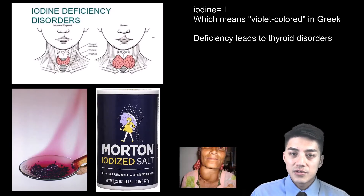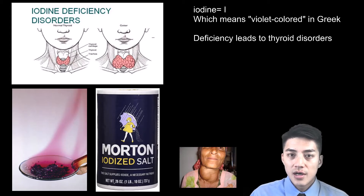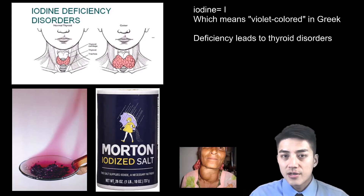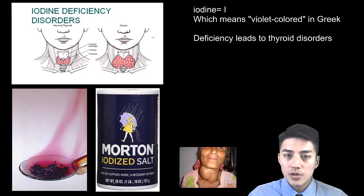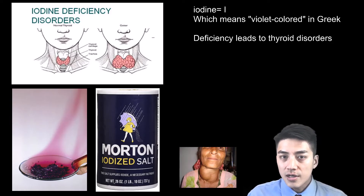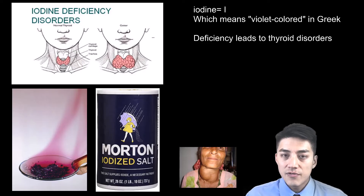Iodine is known for its purple and violet colored fumes and vapors. Not getting enough iodine in your diet results in a disorder in your thyroid. Your thyroid is located in your neck region and it produces hormones that are really important for your growth and your health overall. Luckily, nowadays we have iodized salt, which provides enough of this nutrient in your diet.